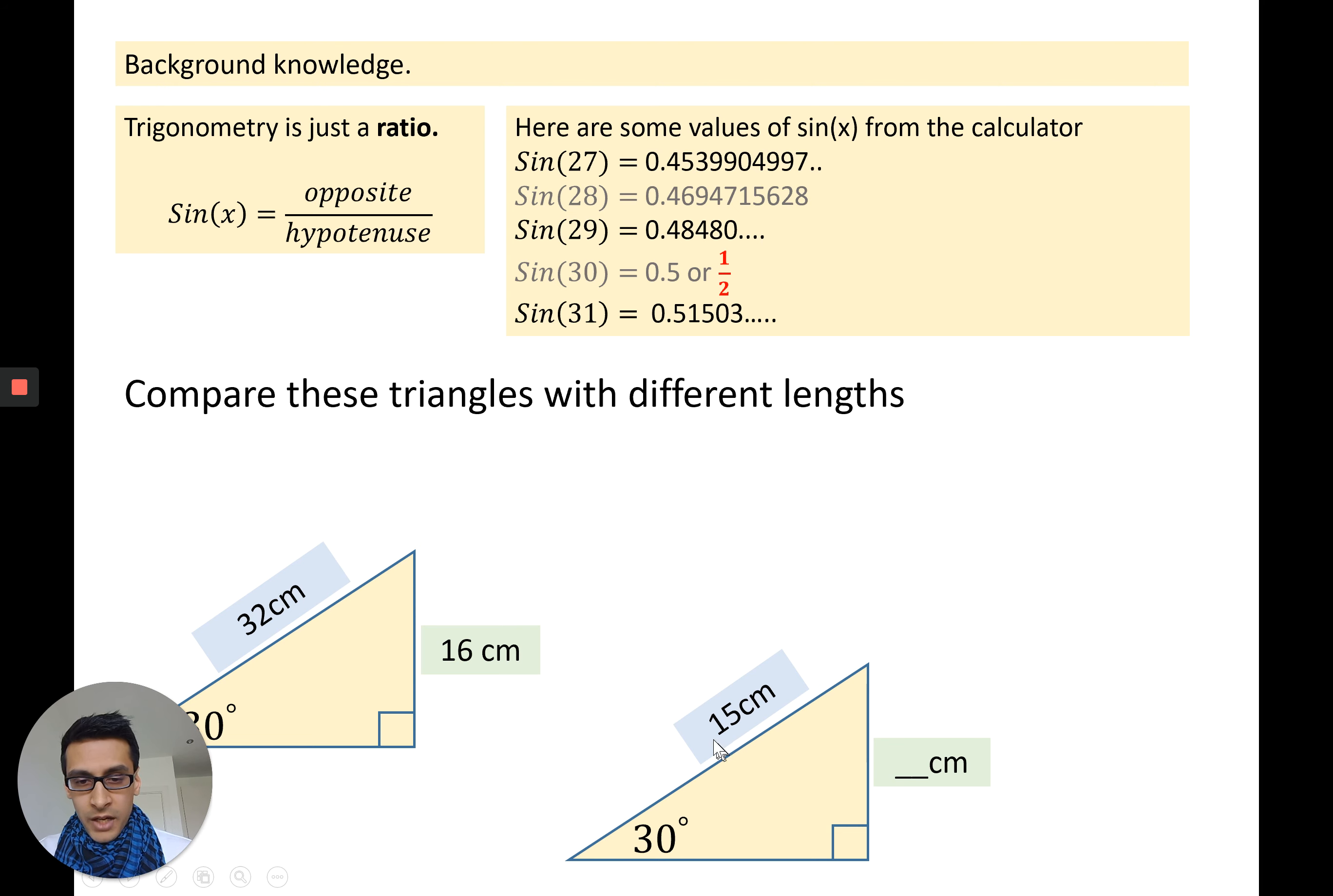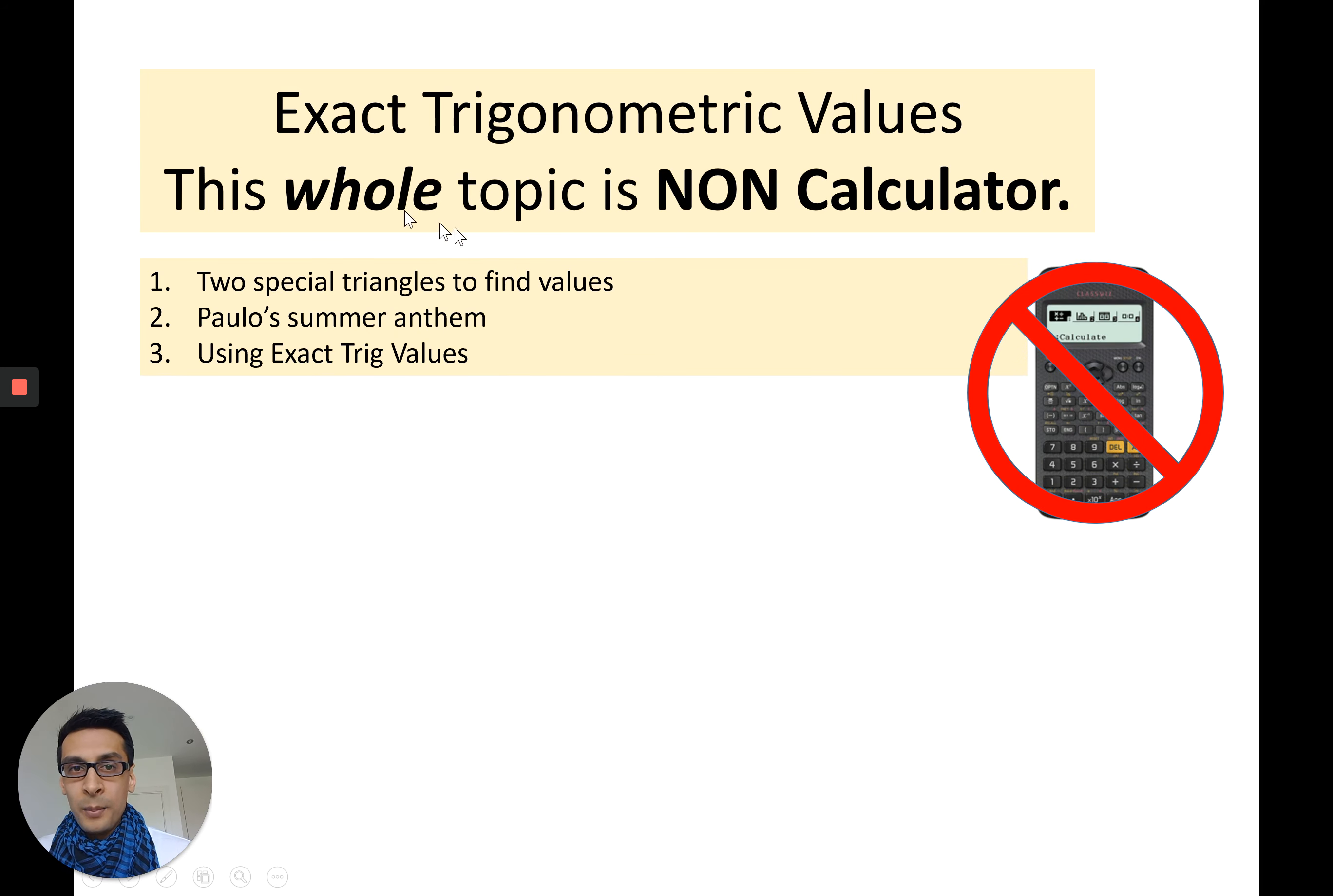In the same way, this triangle here on the right, you can see if the hypotenuse is 15, well that must mean that the opposite to the 30 degrees will have to be half of that, which is 7.5. In this triangle here, if the opposite is 20 then the hypotenuse has to be 40. So the big idea is we're going to be using specific trigonometric values for specific angles such as 30. This whole topic is going to be non-calculator.